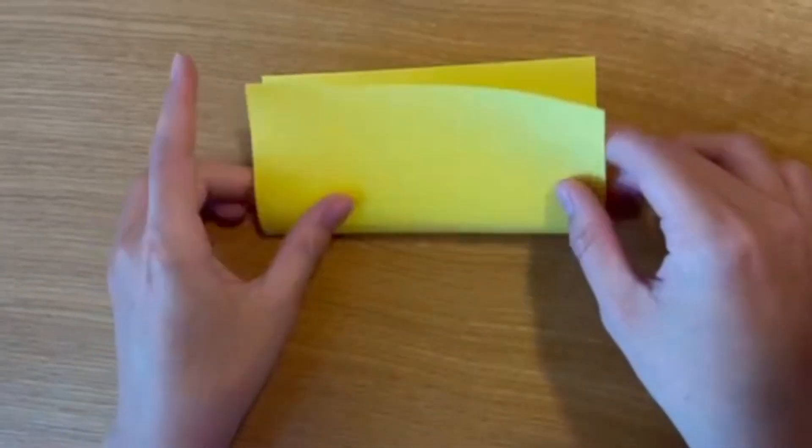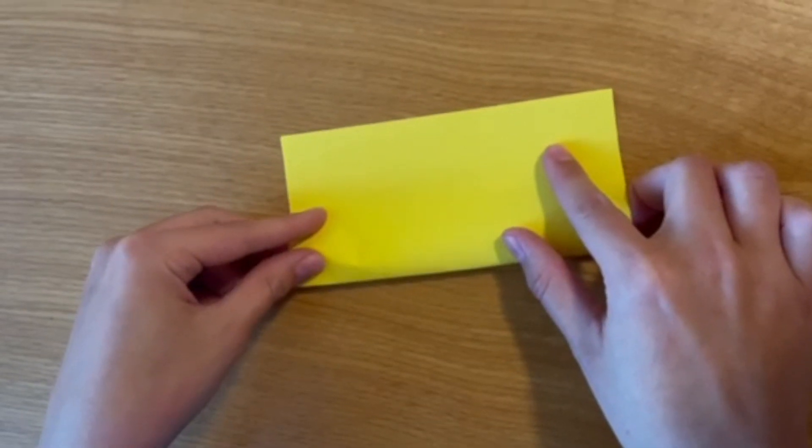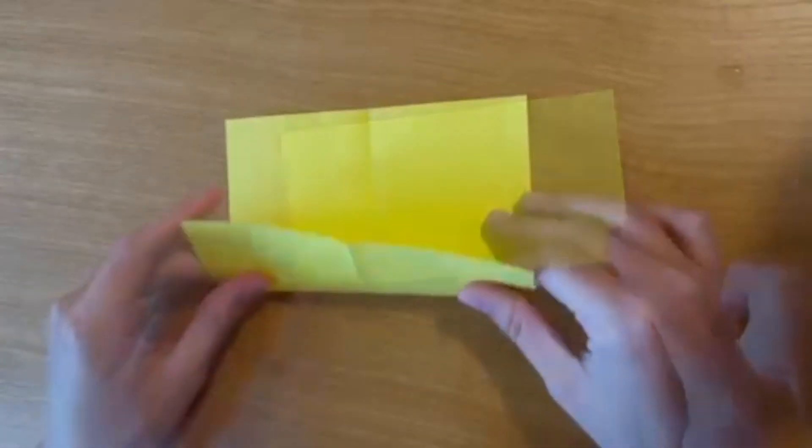You'll also need one googly eye, some glue, stickers, and markers to decorate the fish however you want. For the first step we're going to fold our piece of paper in half hot dog style. Next we're going to fold it again in half the other way, then we're going to open up the paper and fold up to the line we created.